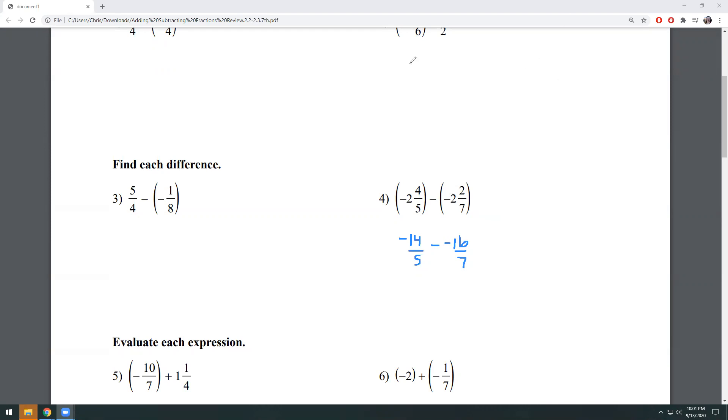Our second step is going to be getting common denominator. So the easiest thing that you can do if you don't know what the LCM is, is to just multiply the denominators by each other. What I mean by that is I see a seven over on this side, so I'm going to multiply this fraction by seven. I see a five over here, so I'm going to multiply this fraction by five. That is always going to give me a common denominator that works because I'm just multiplying it by that other number. It's not always going to be the least common multiple, so you might have to do a little bit more reducing at the end.